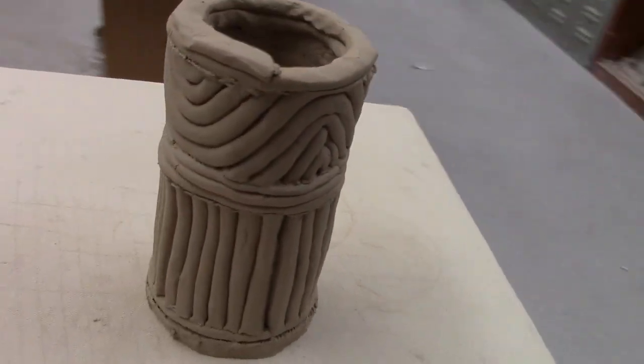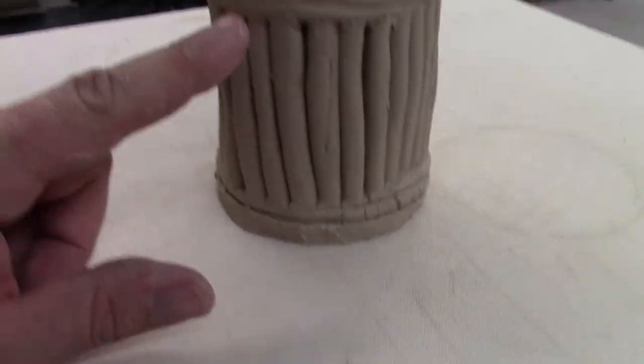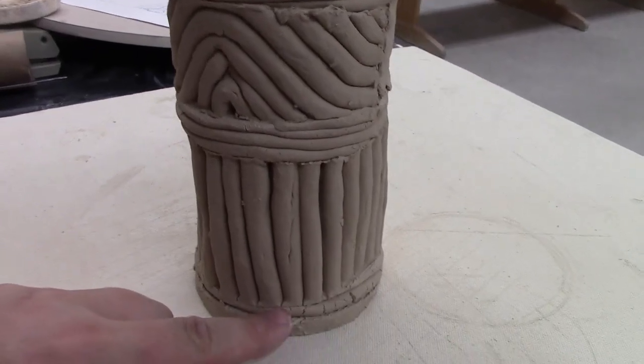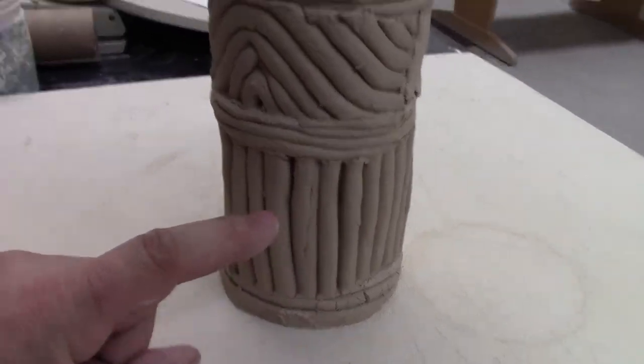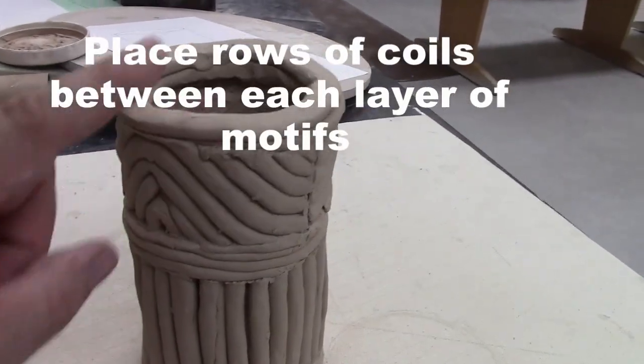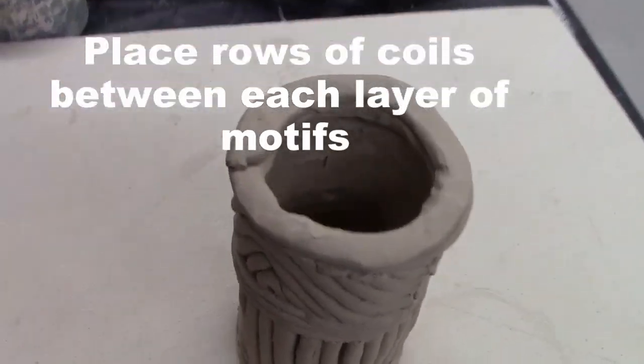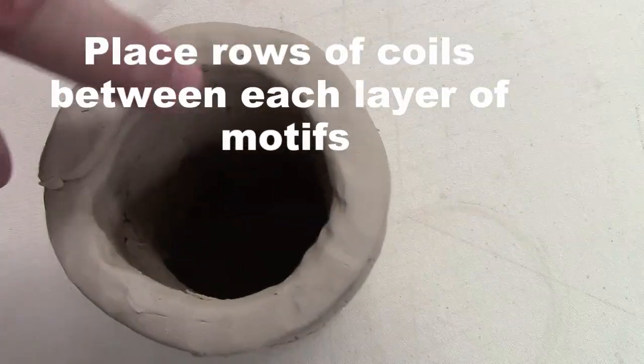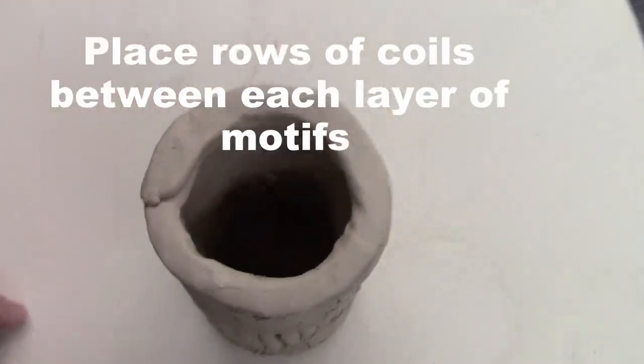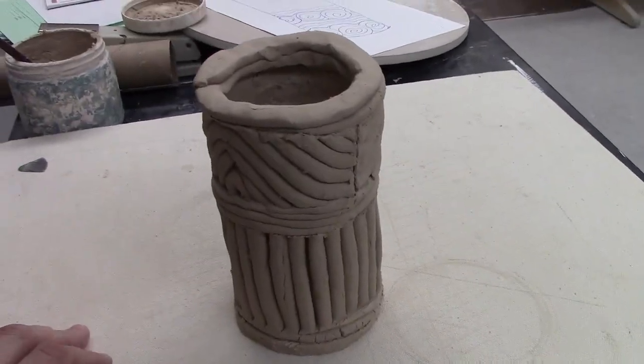Here's my decorative coil pot about halfway done. You can see the motifs going all the way around. I have the vertical line and then the wavy line. On the bottom, my first row is a coil, then after I do a row of motifs, I have coils and motifs and then coils. That strengthens it and helps it to stay together. I haven't smoothed this part out but I've smoothed out the inside. That will help hold it all together.